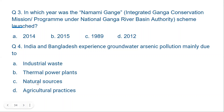The reason is that the Ganga River flows through India and Bangladesh. The Ganga River Basin lacks the bacteria that fixes arsenic in the soil. When that bacteria is absent, arsenic is not fixed in the soil but is instead released into the groundwater. That is why natural sources is the correct answer for India and Bangladesh's arsenic pollution problem.